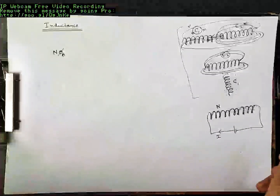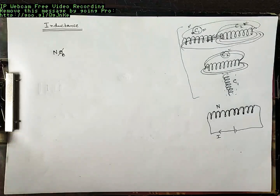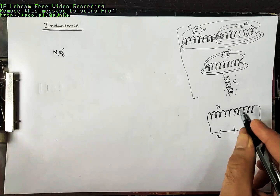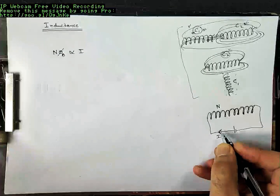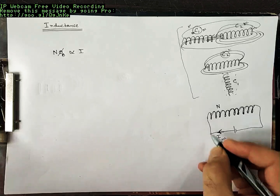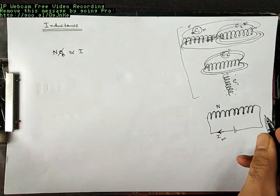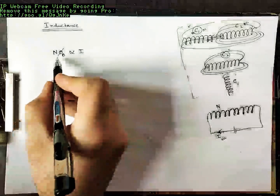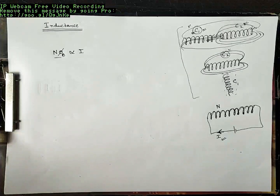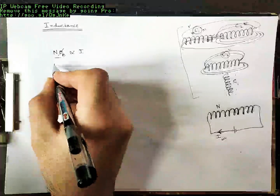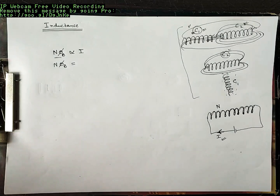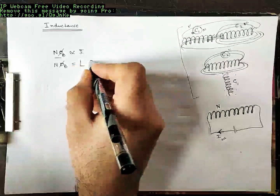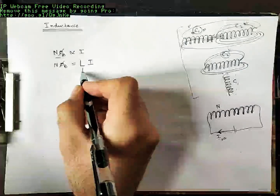This total flux through the coil — the total flux produced by this solenoid — is directly proportional to the current through the coil. Why? Because more current means a stronger magnetic field B, and a stronger magnetic field means more flux φ. So total flux is directly proportional to current. We can write N·φ_B = L·I, where L is the constant of proportionality, known as inductance.